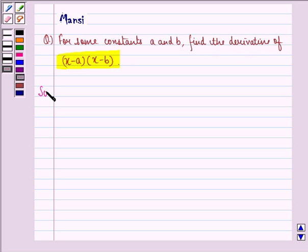So let us start with a solution to this question. Let the function f(x) be equal to (x - a)(x - b). Let us open the bracket first of all.